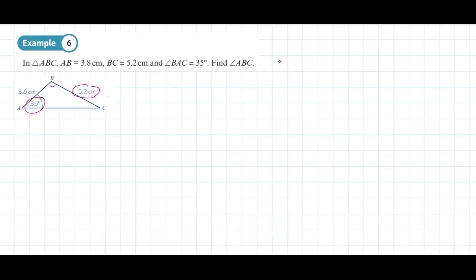So if we were to work out angle B directly, we need the length of side AC. Now we don't have that, so what we can do as an alternative is use the 3.8 centimeters with the angle at C. Once we've worked out the angle at C, we can use that with the 35 degrees and the fact that angles in a triangle add up to 180 to work out angle B.